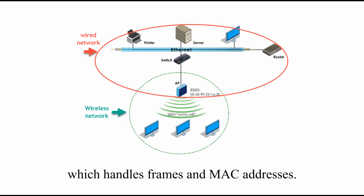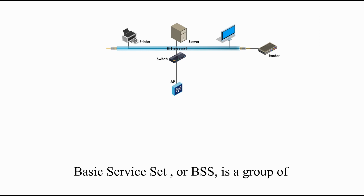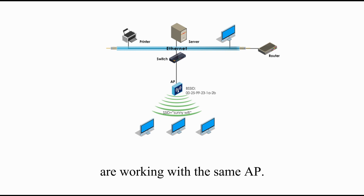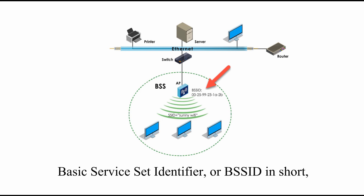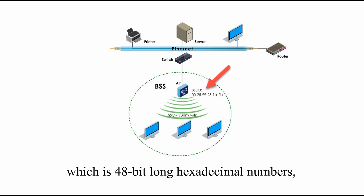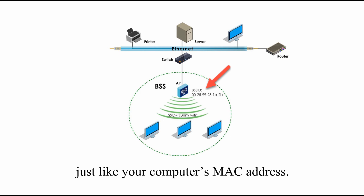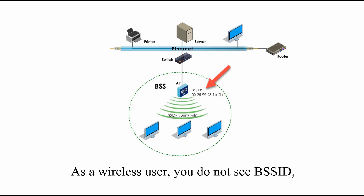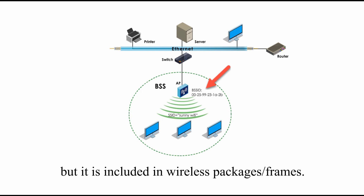Basic Service Set, or BSS, is a group of wireless network devices that are working with the same AP. Basic Service Set Identifier, or BSSID, is the AP's physical or MAC address, which is 48-bit long hexadecimal numbers, just like your computer's MAC address, same format. As a wireless user, you do not see BSSID, but they are included in wireless packages or frames.